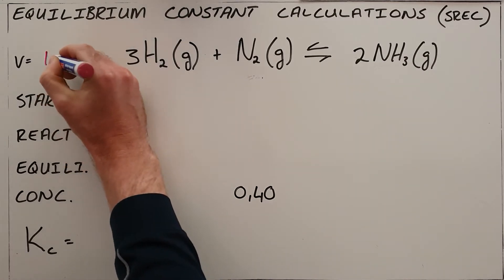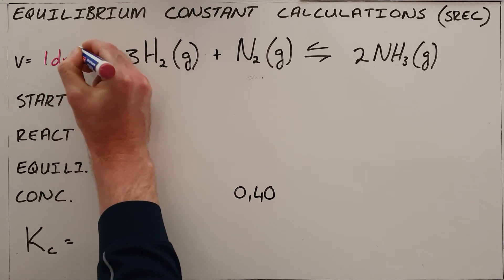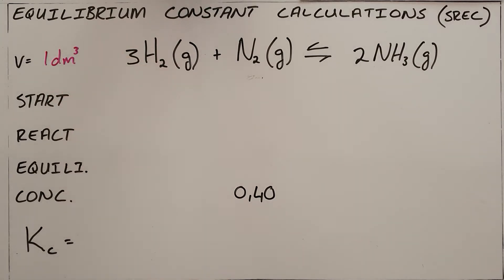So the easiest decision to make is to make that volume one cubic decimeter, because that allows you to easily convert between concentrations and volumes.